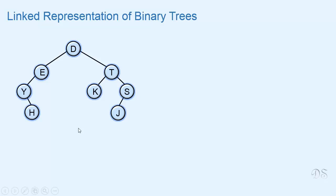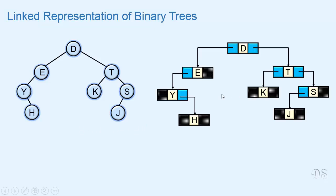Now suppose we have this binary tree. This is the linked representation of this binary tree. The left child reference refers to the left child of the node and the right child reference refers to the right child of the node. For a node that does not have a left child, the left child reference is null, and for a node that does not have a right child, the right child reference is null.